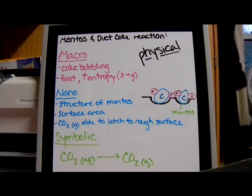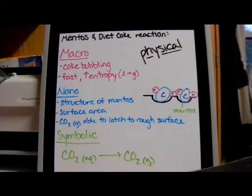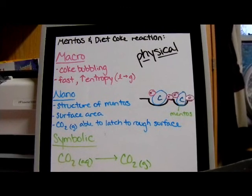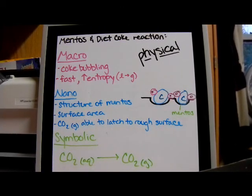At the nano level, the structure of the Mentos is the most significant cause of the eruption due to nucleation. The surface of the Mentos is rough and littered with many small holes that increase the surface area available for reaction. This means the number of reagents exposed to each other at any given time also increases.